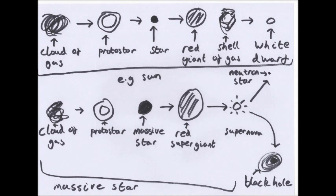Other fusion reactions happen inside red giants, and the star remains as a red giant for about a billion years before throwing off a shell of gas. The rest of the star is then pulled together by gravity and collapses to form a white dwarf star. No fusion reactions happen inside a white dwarf, and it will eventually cool over about a billion years to become a black dwarf.